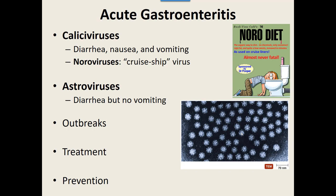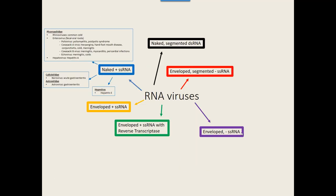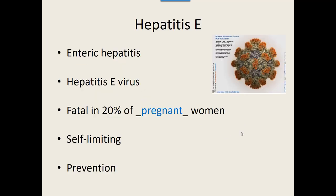Our last naked positive-sense single-stranded RNA virus is the Hepeviridae group — it's another hepatitis virus: hepatitis E. Hepatitis E is an enteric hepatitis, not because it is spread fecal-oral, but because it can cause vomiting as well as jaundice, fever, and fatigue. It's a viral infection that, because it causes vomiting, is considered our one enteric hepatitis.